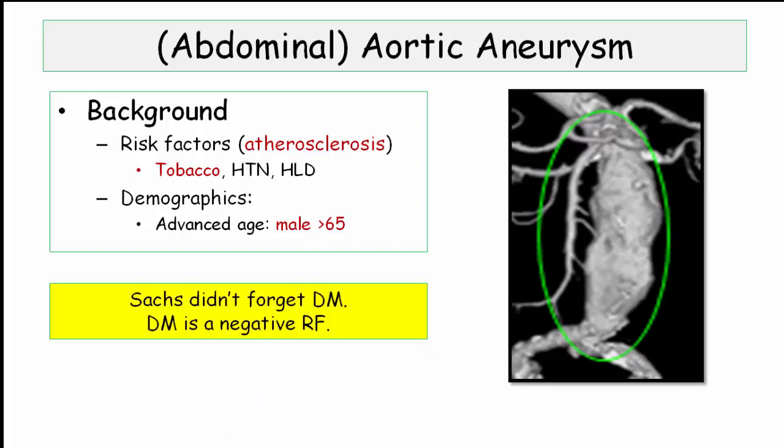You might be thinking that diabetes was forgotten — well, it turns out, for unclear reasons, perhaps related to fibrosis, that diabetes is actually a negative risk factor for aneurysm. That is, the presence of diabetes reduces the risk of aneurysm formation. This is an interesting observation, but not test-worthy fodder.